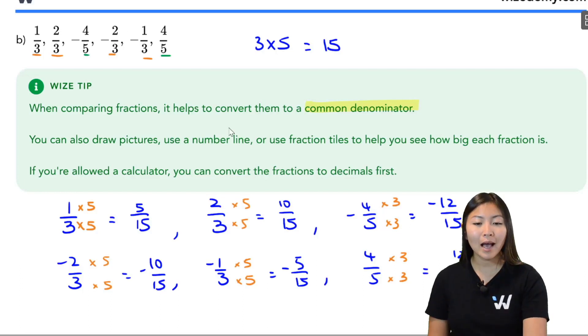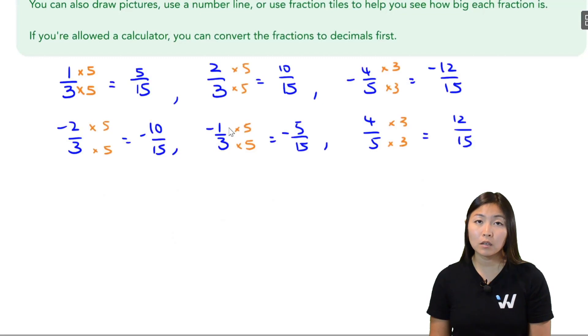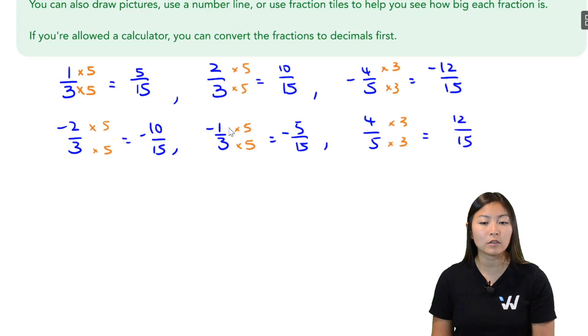So now we have this list of fractions here. Again, we can use a number line or think in terms of number line. Positive numbers go on the right, negative numbers go on the left. So I'm actually going to start with the negative numbers.